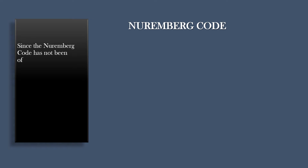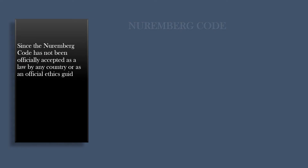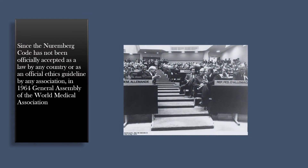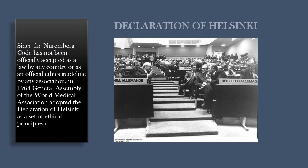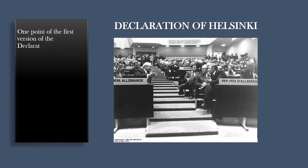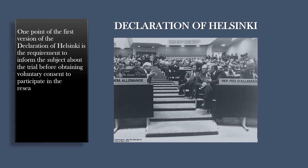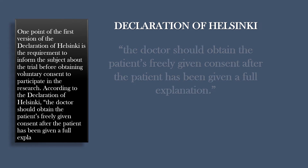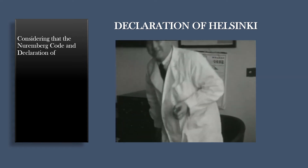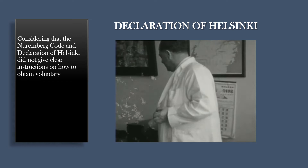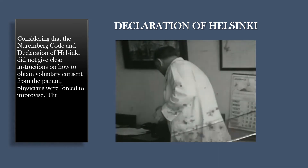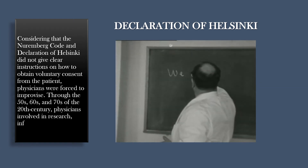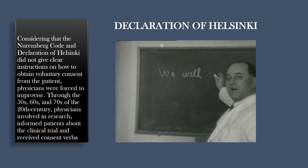Since the Nuremberg Code has not been officially accepted as a law by any country or as an official ethics guideline by any association, in 1964, the General Assembly of the World Medical Association adopted the Declaration of Helsinki as a set of ethical principles regarding medical research involving human subjects. One point of the first version of the Declaration of Helsinki is the requirement to inform the subject about the trial before obtaining voluntary consent to participate. According to the Declaration of Helsinki, the doctor should obtain the patient's freely given consent after the patient has been given a full explanation. Through the 1950s, 60s, and 70s, physicians involved in research informed patients about the clinical trial and received consent verbally.